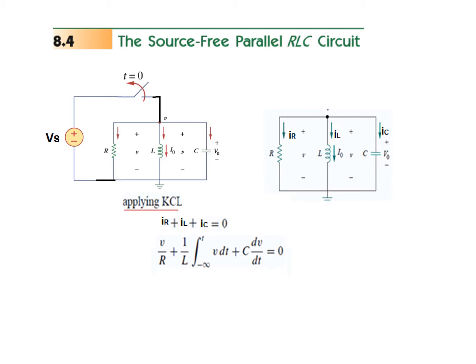For the general derivation, we write KCL: the summation of all three currents is equal to zero (currents leaving). IR is V over R — the same voltage appears across all three elements. IL is one over L times the integral of V dt, and IC is C times dV/dt.